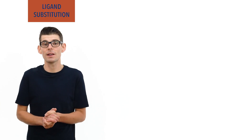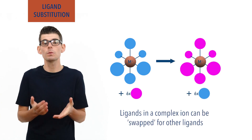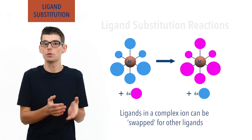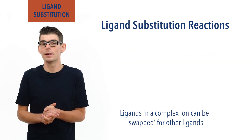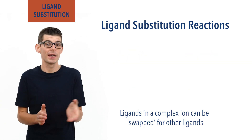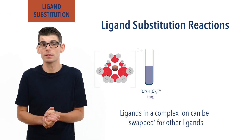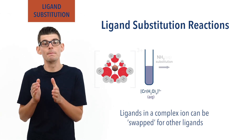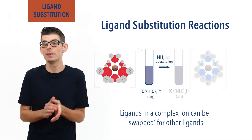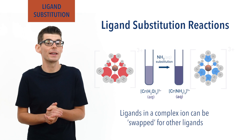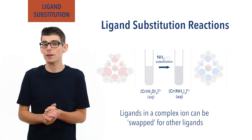The ligands in a complex ion can be swapped or substituted with other ligands in what are called ligand substitution reactions. For example, the water ligands in a metal aqua complex ion like hexa aqua chromium 3, [Cr(H2O)6]3+, can be exchanged with ammonia in a ligand substitution reaction to form hexa amine chromium 3, [Cr(NH3)6]3+.